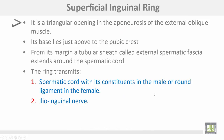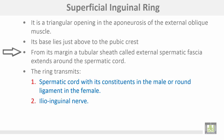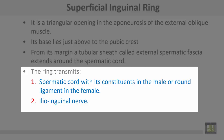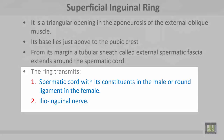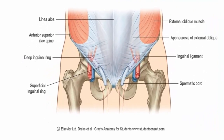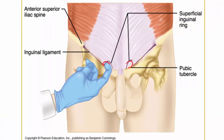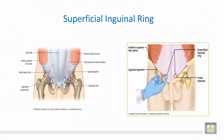The superficial inguinal ring is a triangular opening in the aponeurosis of the external oblique muscle. Its base lies just above the pubic crest. From its margins arises a tubular sheath called the external spermatic fascia, which extends around the spermatic cord. The ring transmits the spermatic cord with its constituents in the male, or the round ligament in the female, and the ilio-inguinal nerve. This figure shows the superficial inguinal ring as a triangular opening in the aponeurosis of the external oblique muscle.